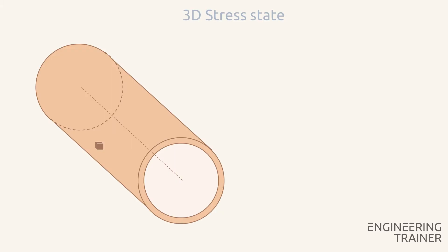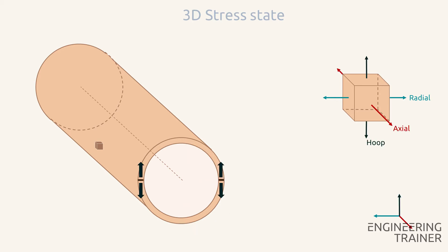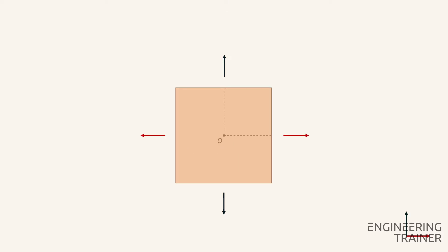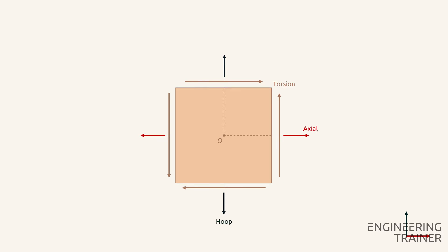We consider a small cube of the material at an arbitrary location. On this cube, the radial stress applies, the axial stress, and also the hoop stress. The stress state is three-dimensional, but since we consider thin-walled piping, we can neglect the radial stresses. As a result, we end up with a two-dimensional stress state, which we visualize from the side. Next to the axial and hoop stress, we also consider the torsion stress. The axial and hoop stress are normal stresses that work perpendicular to the surfaces and tend to stretch the cube, while the torsion stress is a shear stress that works parallel to the surfaces and tends to deform the cube.